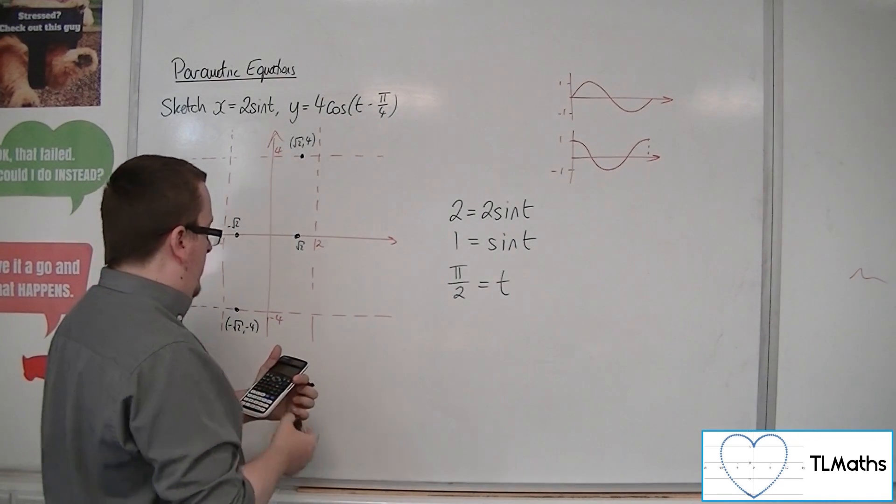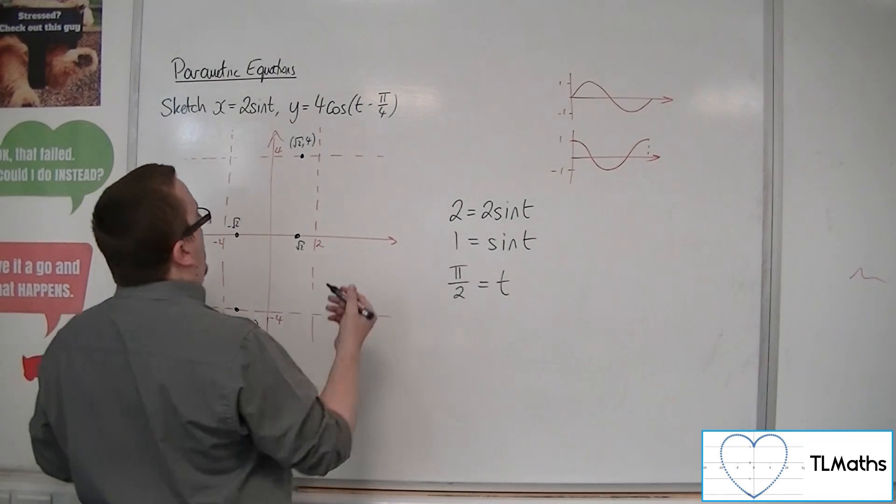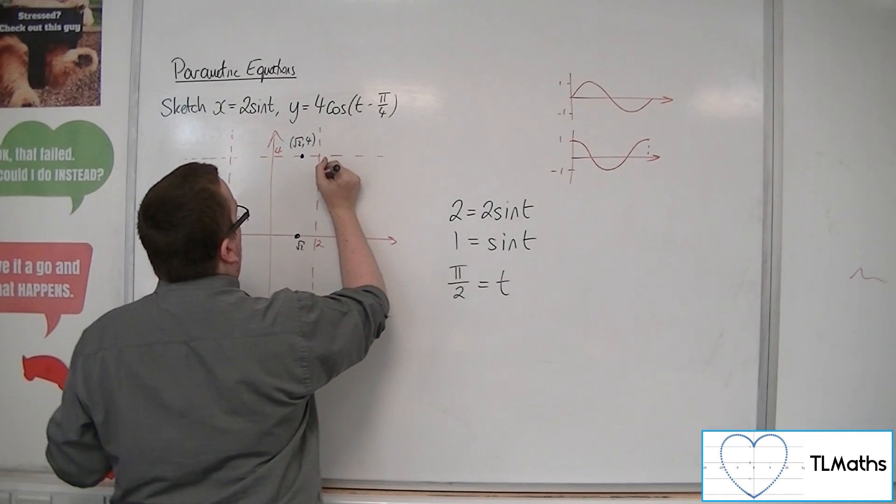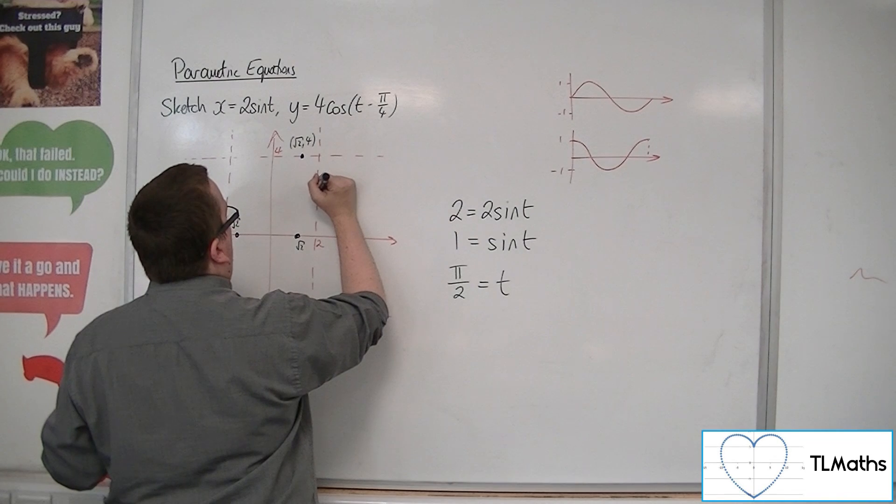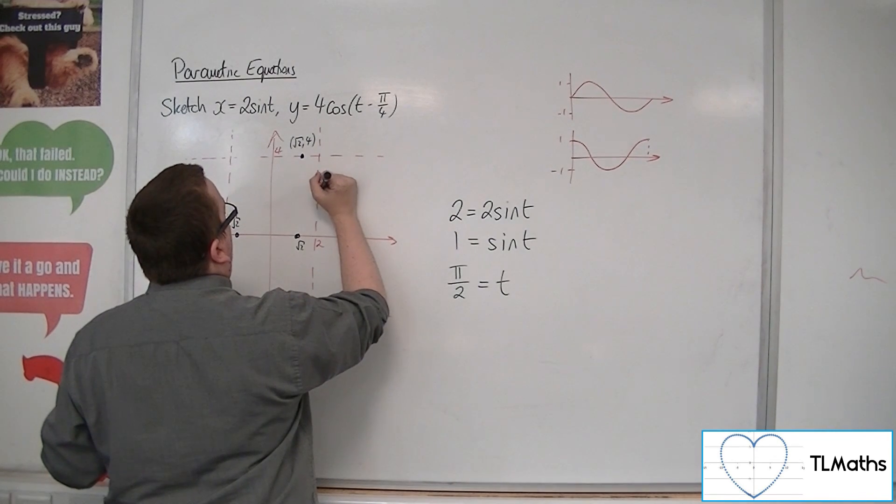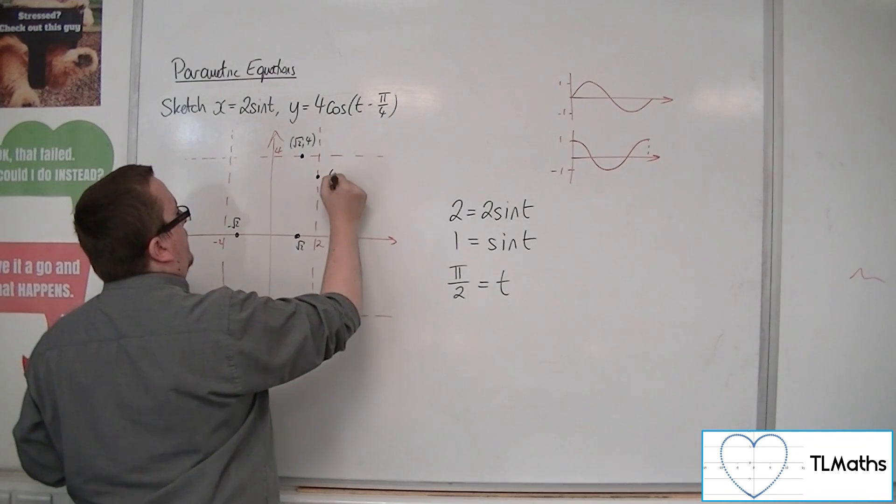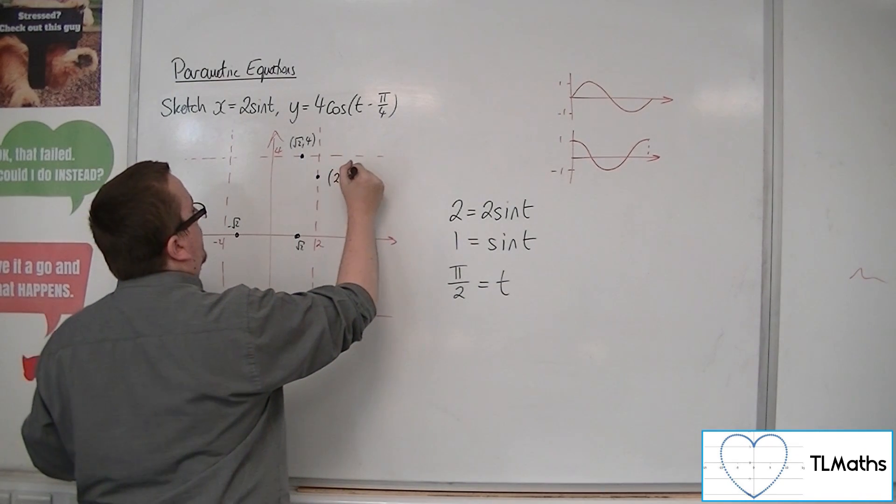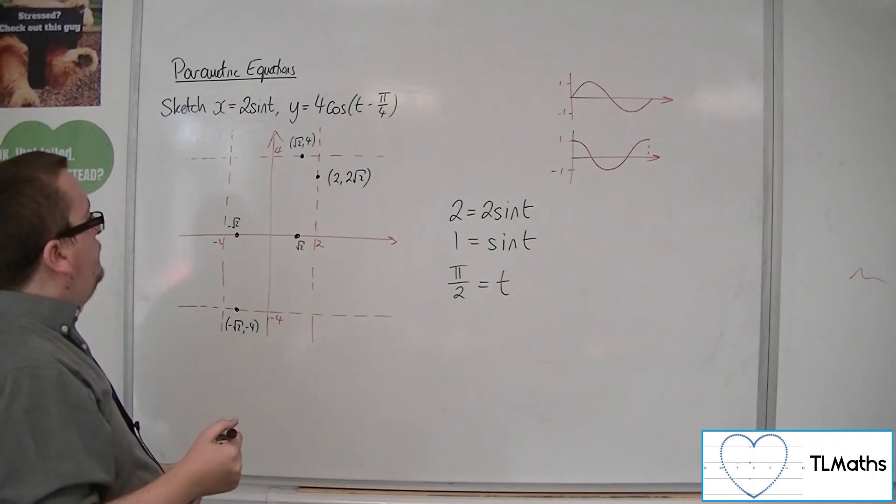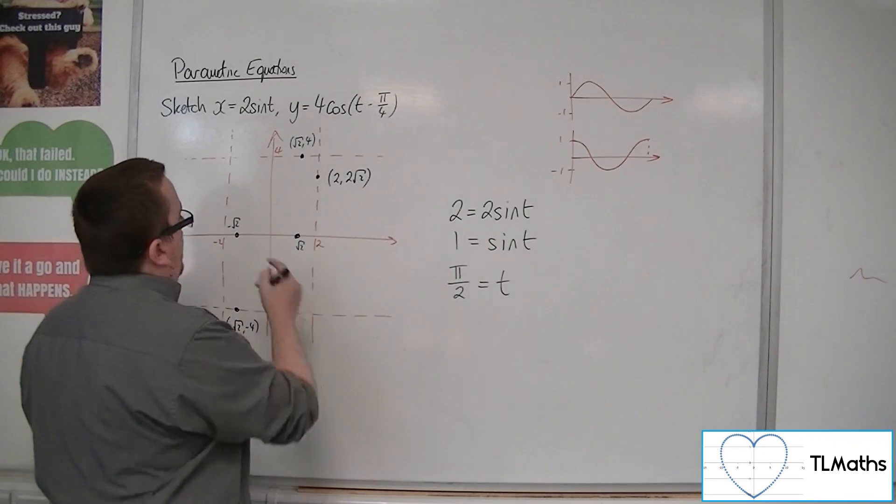So if I substitute pi over 2 into this, I get 4 lots of cos of pi over 2 take away pi over 4, and I get 2 root 2. So 2 root 2 is about 2.8. So somewhere up here, so that'd be about 2, wouldn't it? So that'd be about 3, so around about there. So 2, 2 root 2.